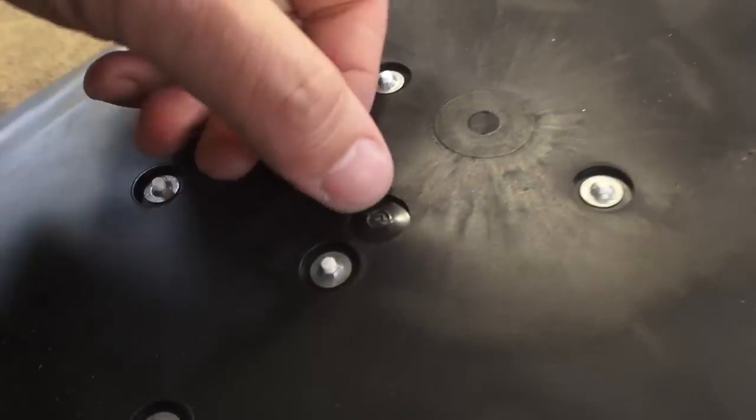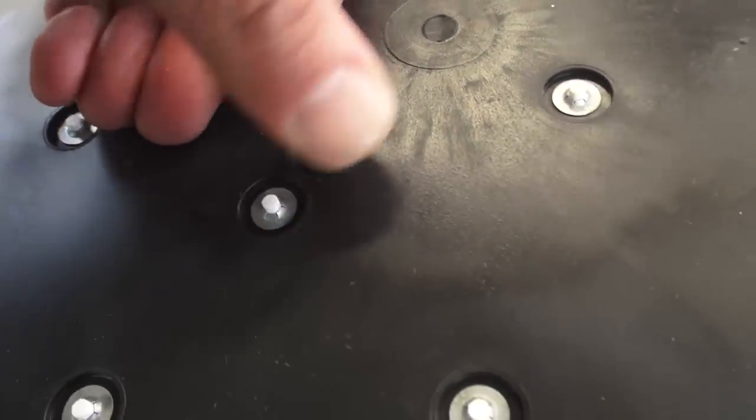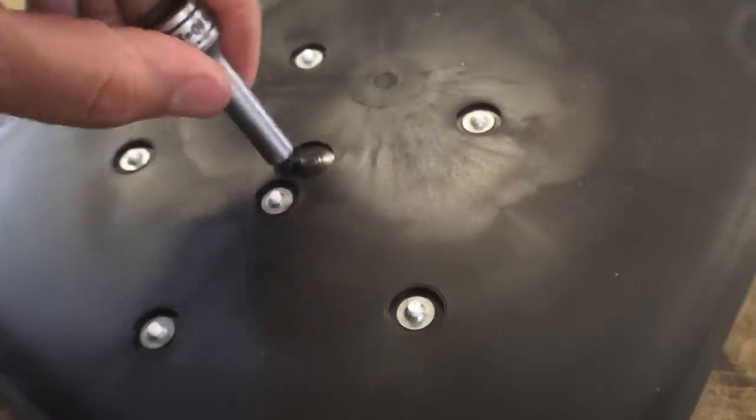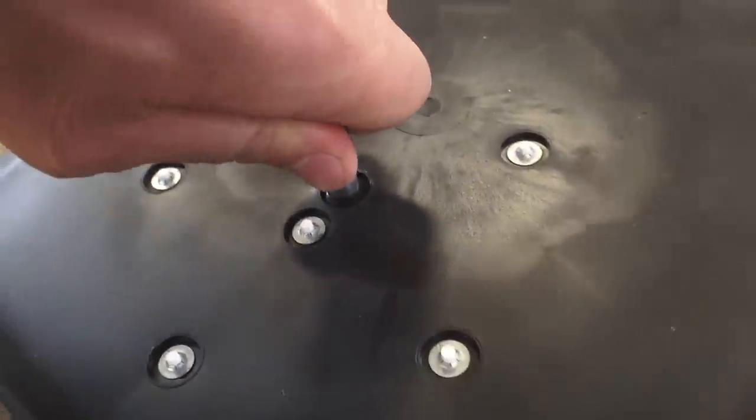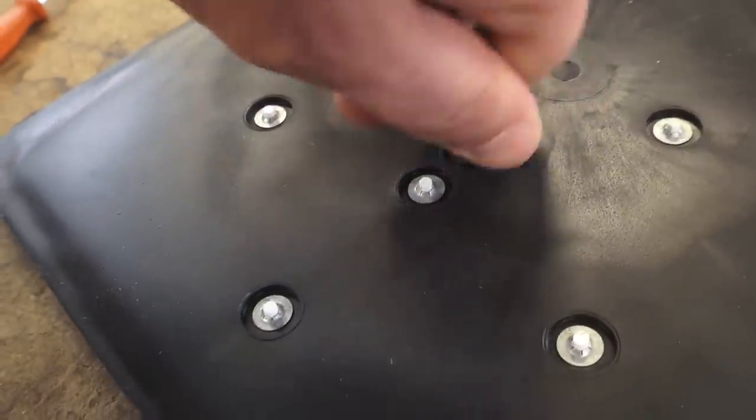And it should poke out the back. If it's a little stubborn I get myself like a deep wall socket, maybe like a quarter inch deep wall socket like this. And start pushing down so the little tab sticks through the rubber.